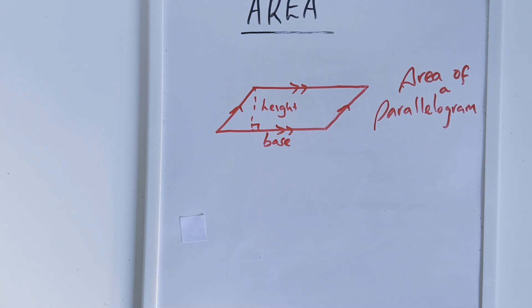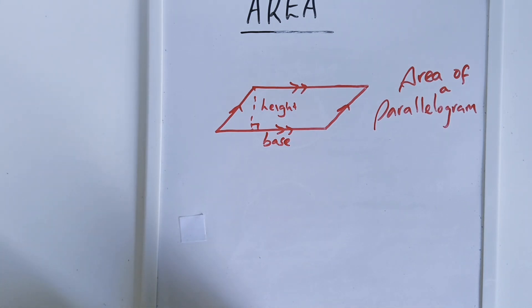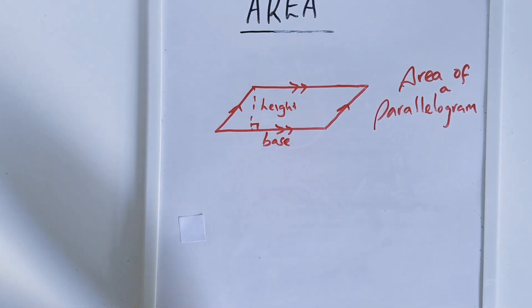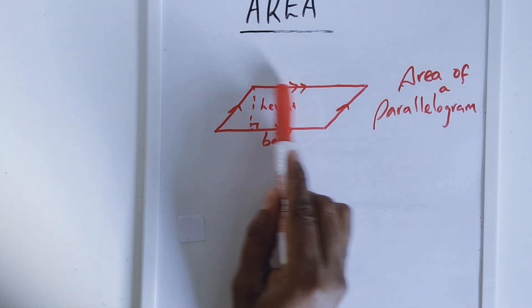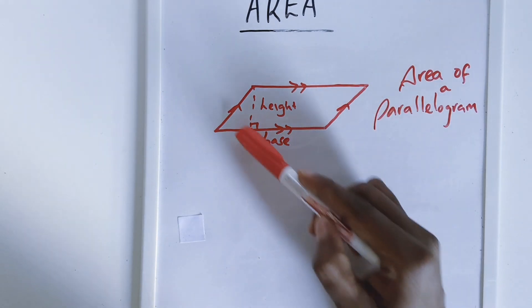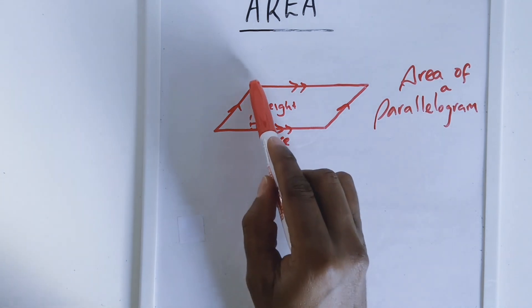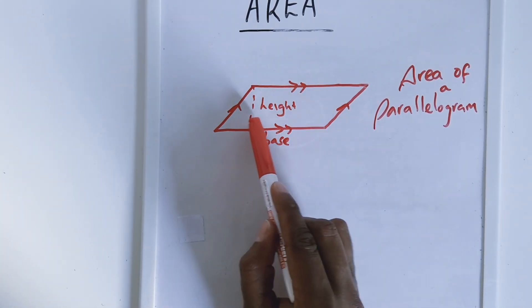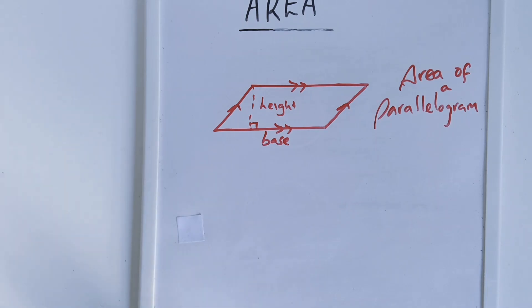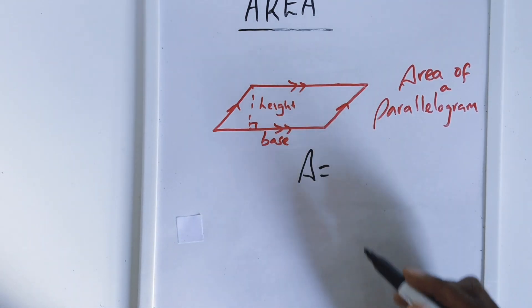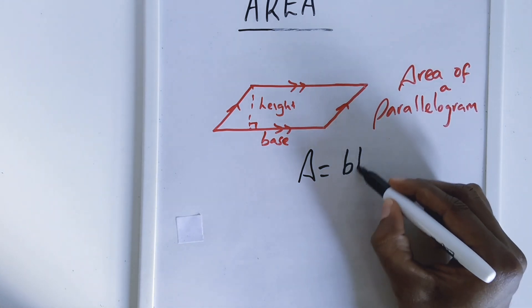Let us do an example where we are finding the area of a parallelogram. But before we move into an example, let me highlight a few properties of a parallelogram. As you can see in this diagram, the opposite sides of a parallelogram are always equal. The perpendicular line meeting the base at 90 degrees is always the height. The formula is: area of a parallelogram is equal to base times height.